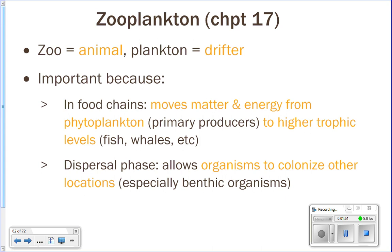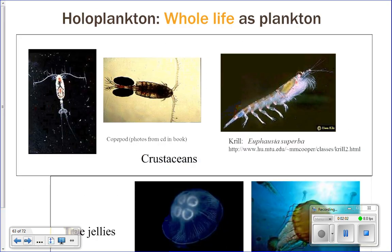Most types of benthic animals will have some sort of zooplankton stage where they are part of the plankton for a part of their life. There are two different kinds of zooplankton: holoplankton and meroplankton.